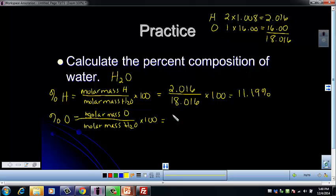So for our molar mass of oxygen, there's 1 oxygen. So we use this 16. And we divide again by that molar mass of water, 18.016, and multiply by 100. And when you put that in your calculator, hopefully you got 88.81%.